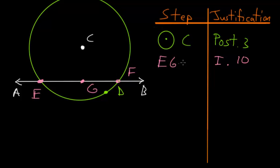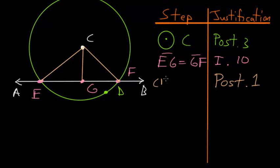And from here we can use postulate number one, which says that we can connect any two points with a straight line, and we can use this postulate to create lines between C and E, C and G, and C and F. So we've just constructed the line CE, CG, and CF.